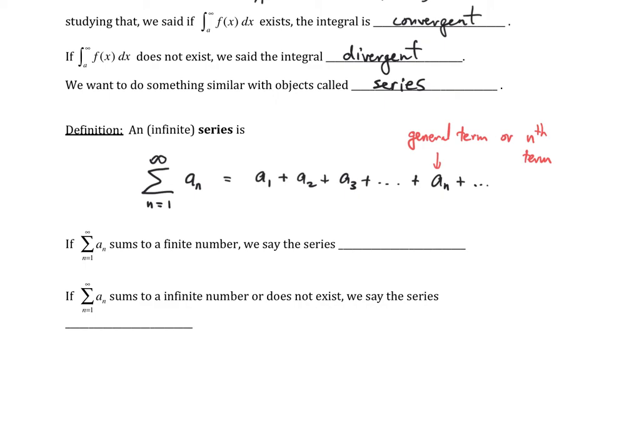Just like for the integrals, if this sums to a finite number, we say the series converges. And if it sums to an infinite number or does not exist, then we say it diverges.